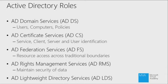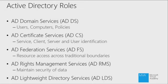Federation Services provides resource access across traditional boundaries — allowing resources in my organization to be accessed by security principals in other organizations without needing some of the traditional trust mechanisms. AD Rights Management Services is a way for me to maintain the security of data in my organization both within and outside of that organization. And Lightweight Directory Services is essentially a copy of the structure of Active Directory Domain Services, which we'll cover later.